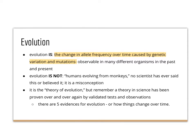Another argument is that evolution is "just a theory." But remember — a theory in science is different from how we use the word in everyday life. A scientific theory has been proven, tested, and validated so many times that we accept it as a fact. It's not an educated guess by a couple of scientists. It is observable, proven over hundreds and thousands of years. We're going to talk about five evidences for evolution.